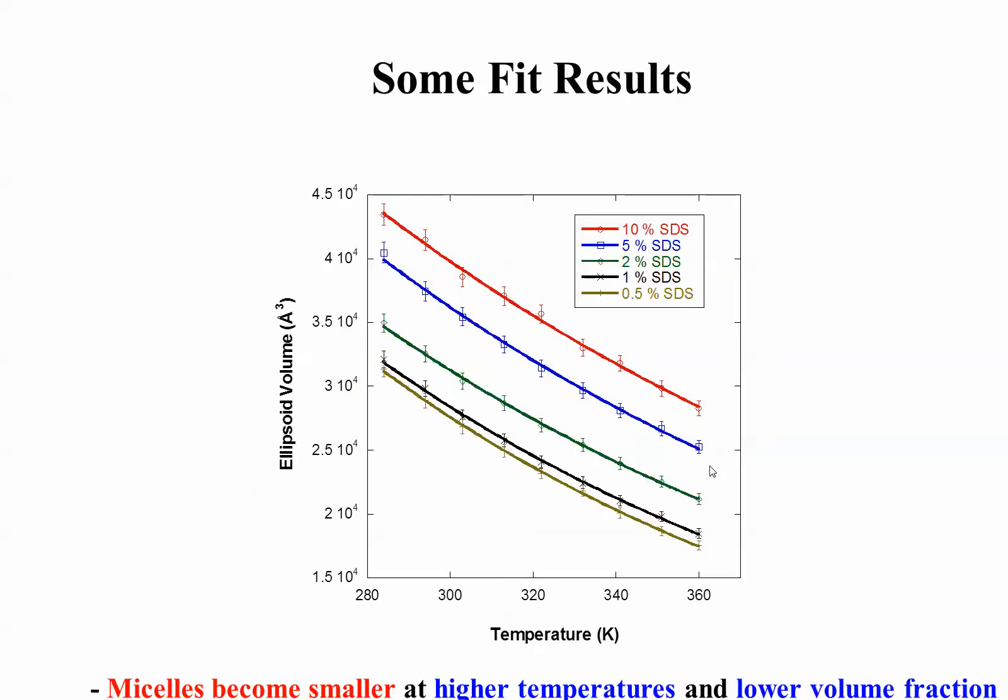Let's look at some of the results. You can estimate ellipsoid volume, which becomes smaller as you increase temperature. It's because hydrogen bonding is softening, but the volume increases as you increase the volume fraction. So, we have the volume of these STS micelles in details for every concentration, every temperature.